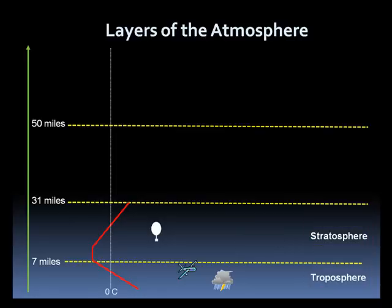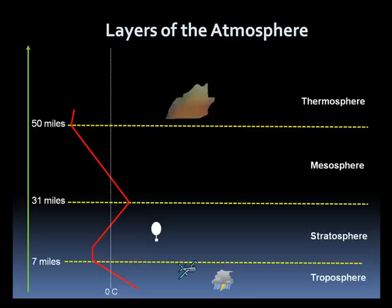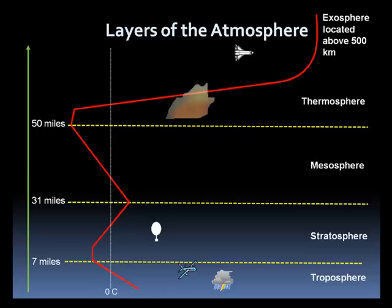Next is the mesosphere. It's colder here, and this is where meteors will burn up, what we commonly call falling stars. Above here is the thermosphere. This layer warms up as you move upwards. The aurora borealis is located in the thermosphere, and the space shuttle flies here. Lastly, there is the exosphere. Molecules are very, very far apart here and gradually escape into space.